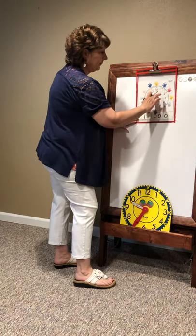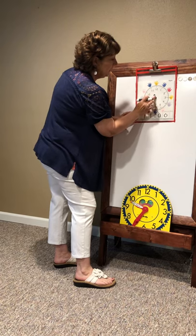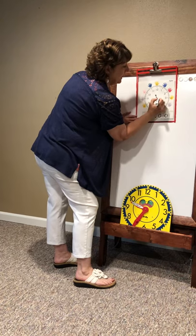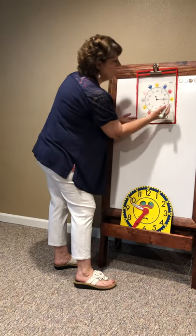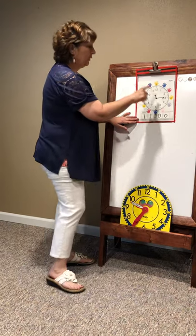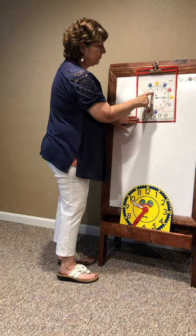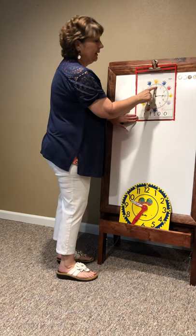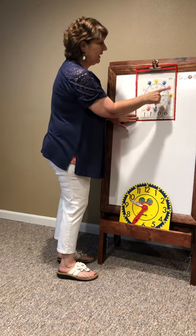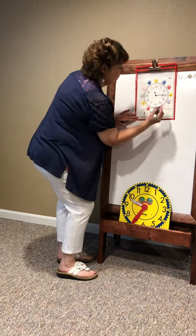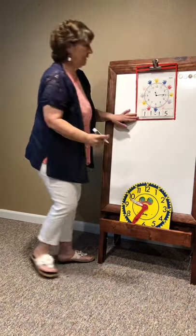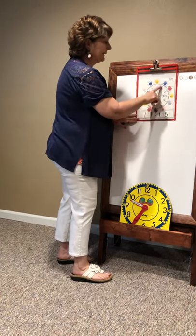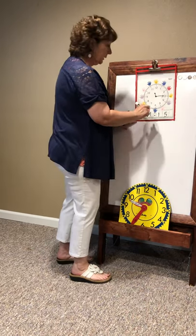I'm going to move the hour hand just a little bit past the 11, and put the long minute hand on the three. Let's do the poem: look for the short hand — what's it past? Past the 11. Look for the long hand, count by fives and make it fast: 5, 10, 15. There's your 11:15. That's a quarter past 11 because you're a fourth of the way around the clock.